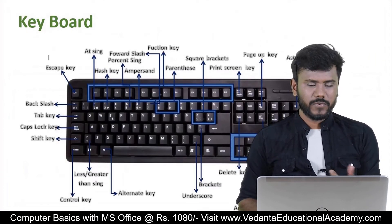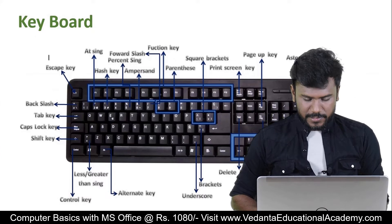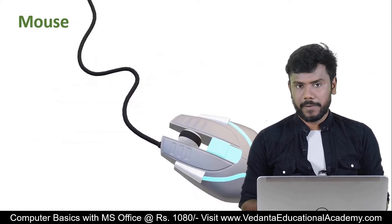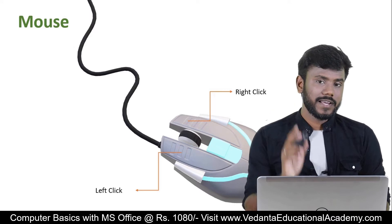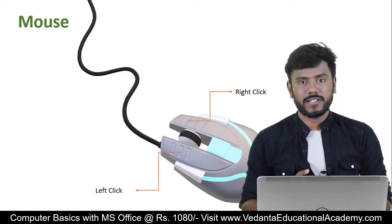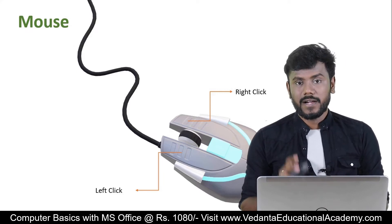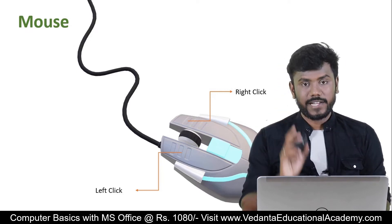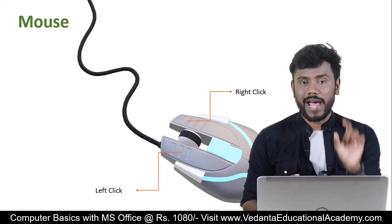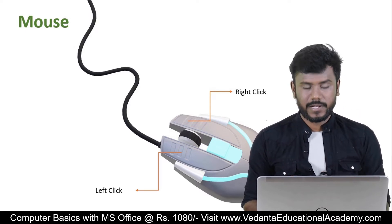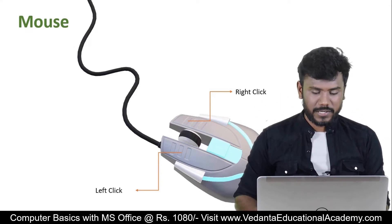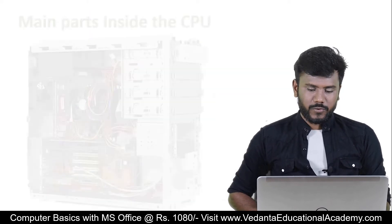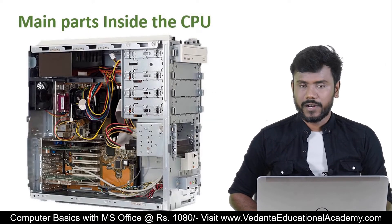Now let's discuss the mouse, which is one of the input devices of a computer. The mouse has two buttons: the right click and the left click. Right click is used to get a list of actions, and left click is used to activate any one action from that list. Inside the mouse you also have a scroller, which is used to scroll up and scroll down.